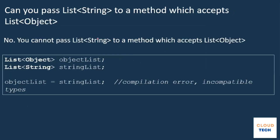The next question is: can you pass a List of String to a method which accepts a List of Object? The answer is no. This is related to generics. You cannot pass a List of String to a method which accepts a List of Object. When you try to assign a string list to an object list, it gives a compilation error — incompatible types. In generics, everything is handled at the compilation level, so the compiler will flag this incompatibility.